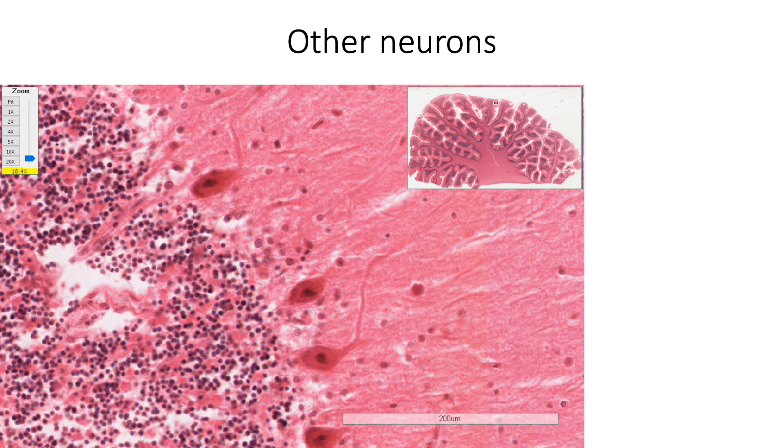In addition to the cells mentioned before, there are cigar-shaped inhibitory Lugaro cells in the Purkinje cell layer and unipolar brush cells, which are seen in the granular layer in the areas which receive input from vestibular nuclei.